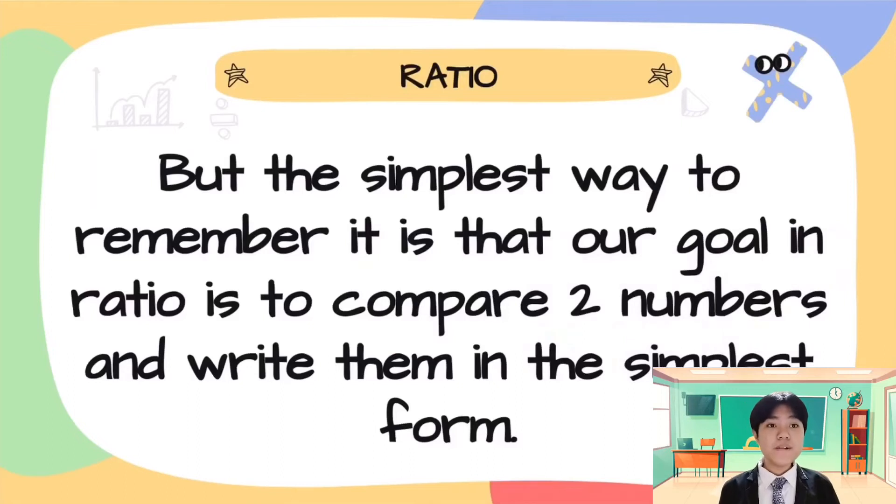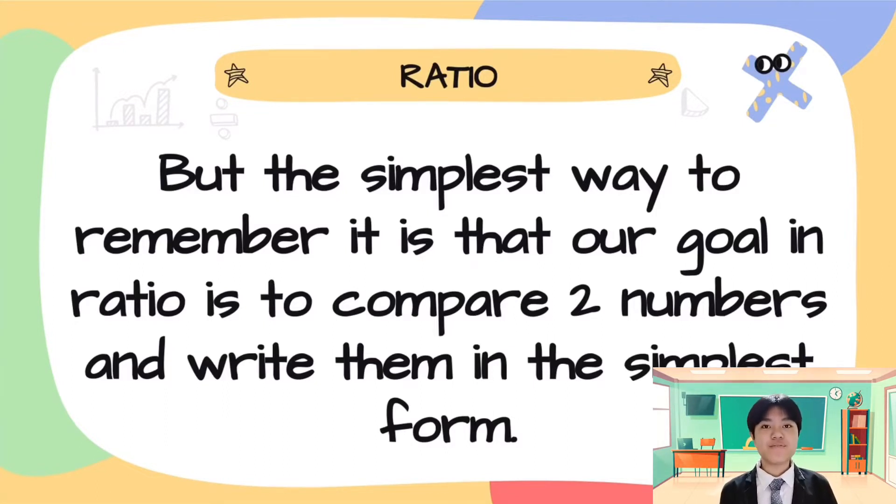So Zedric, since your classmates Denise and Rhyme shared their ideas on what a ratio is, can you give us a clear definition of it? I understood that a ratio is a comparison of two different numbers and can be written in different ways. I also understood that ratios should be expressed in the simplest form. Spectacular insight, students! What you all said was correct and the best way to describe what a ratio is. But the simplest way to remember it is that our goal in ratio is to compare two numbers and write them in the simplest form.